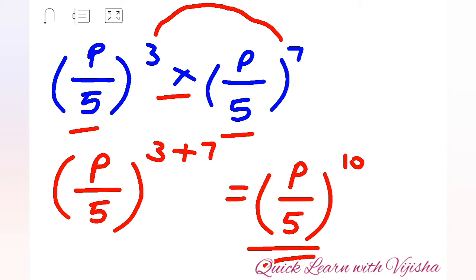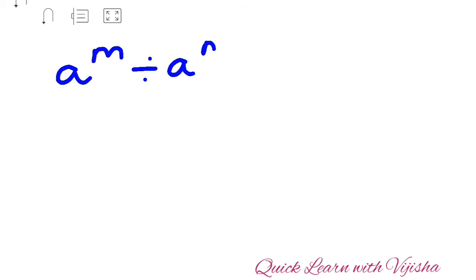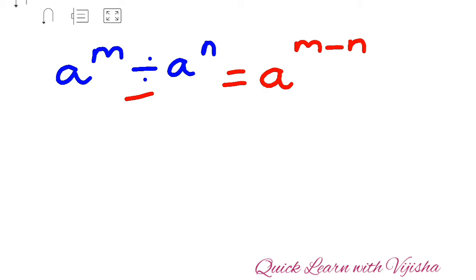Now we will see the next law of indices — the second form. If a raised to m divided by a raised to n is given, since it is division, your base remains a and your index will be m minus n. So for multiplication it is addition, and for division it is subtraction. This way you can remember it.